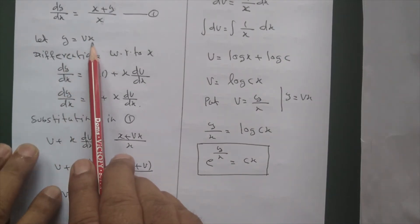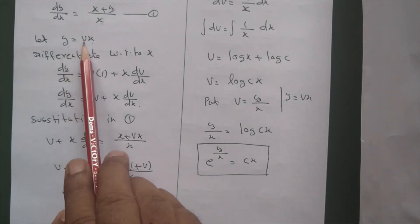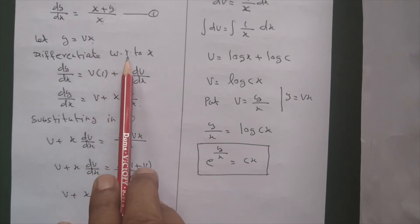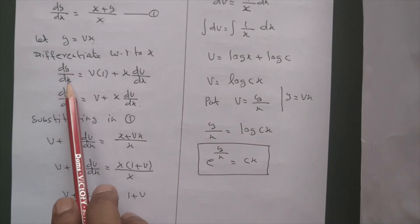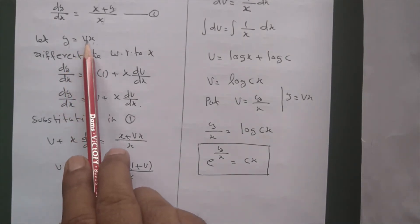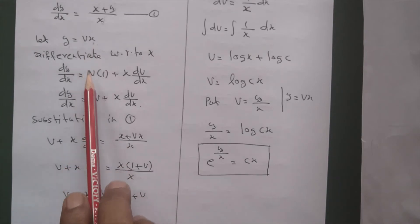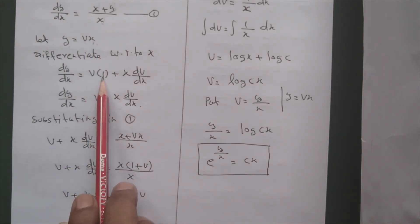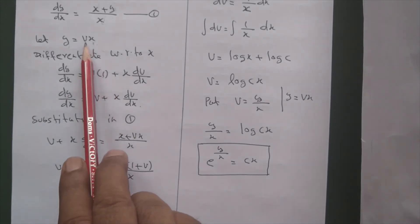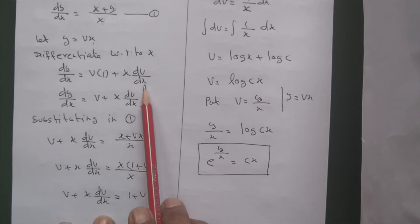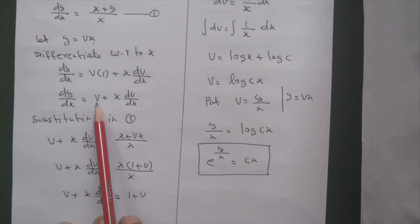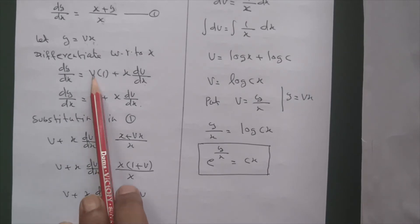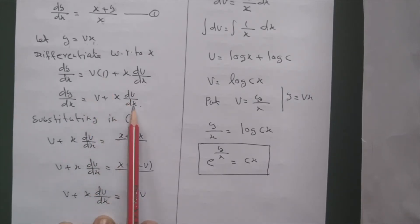To solve, let y equal to vx. Differentiate with respect to x using the product rule: dy/dx equals v times the derivative of x (which is 1) plus x times the derivative of v (which is dv/dx). So dy/dx equal to v plus x dv/dx.